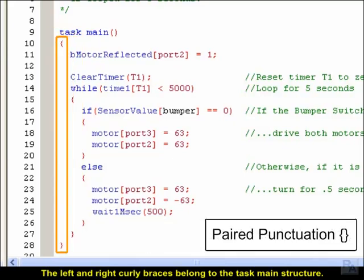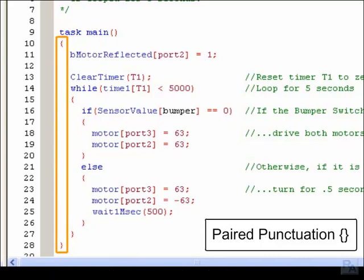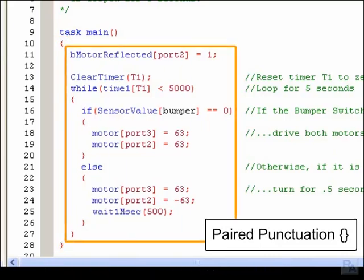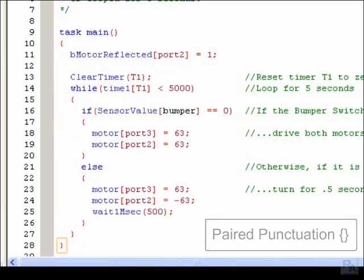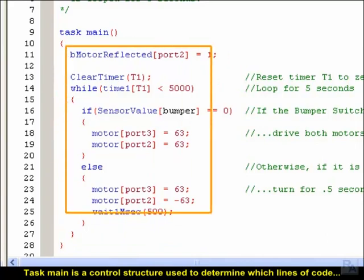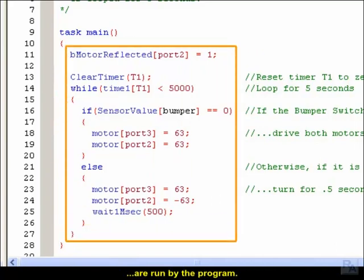The left and right curly braces belong to the task main structure. They surround the commands which will be run in the program. When run, the program starts at task main's opening brace and ends at its closing brace. Task main is a control structure used to determine which lines of code are run by the program.